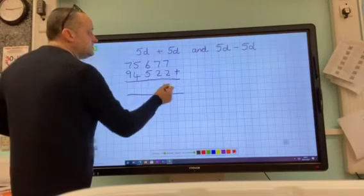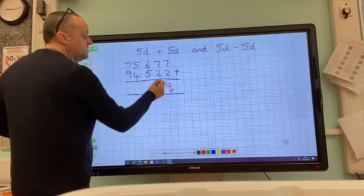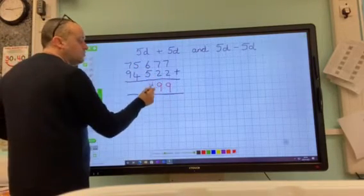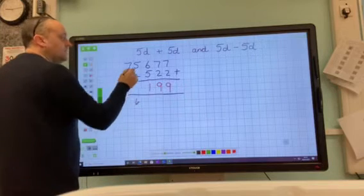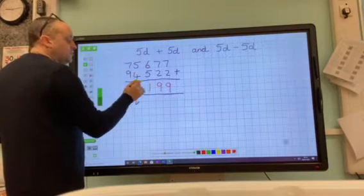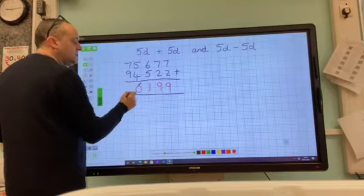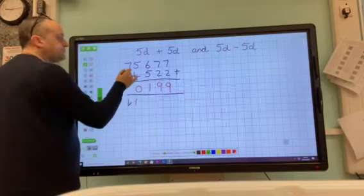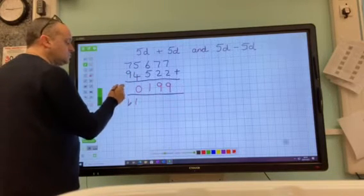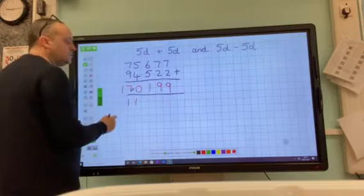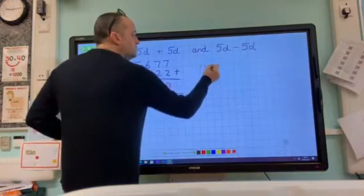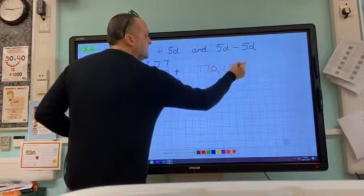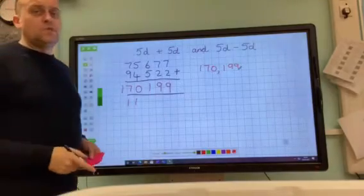Seven and two is nine, seven add two is nine, six and five is eleven. Put your one down and carry your one. Five and four is nine, add one is ten, so you put your zero in, you carry your one. You don't put a one, put your zero in, carry your one. Nine and seven is sixteen, add one is seventeen. Now your answer is 170,199.